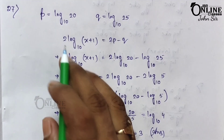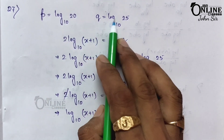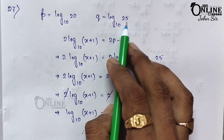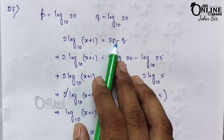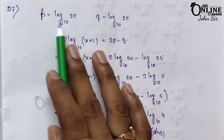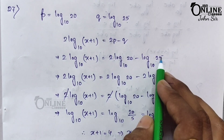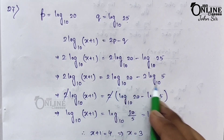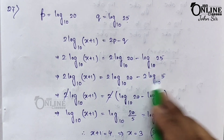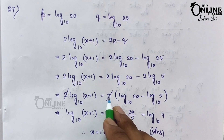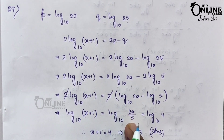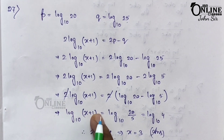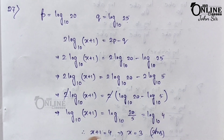Sum number 27: given p = log₁₀ 20 and q = log₁₀ 25, find x such that 2p − q = log₁₀(x+1). Substituting: 2 log₁₀ 20 − log₁₀ 25 = log₁₀(400/25) = log₁₀ 16... simplifying, 2 is common: log₁₀ 20 − log₁₀ 5 = log₁₀ 4. So log₁₀(x+1) = log₁₀ 4, giving x+1 = 4, therefore x = 3.